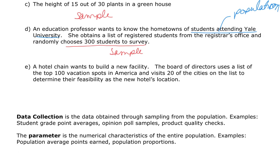Example E: a hotel chain wants to build a new facility. The board of directors uses a list of the top 100 vacation spots in America and visits 20 of the cities to determine feasibility. The 20 cities is the sample — a smaller subset of the top 100 vacation spots in America, which would be the population. Typically, populations are so large it's not feasible to get statistics on the entire population, so we grab a smaller subset, the sample.